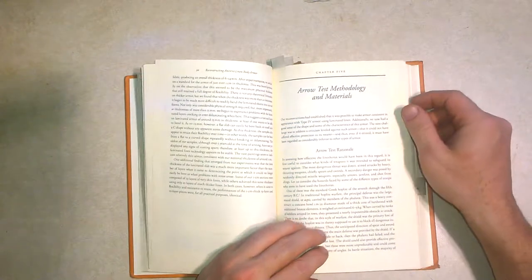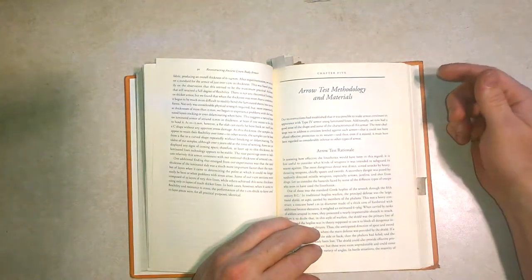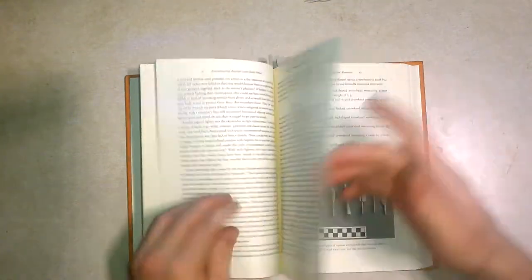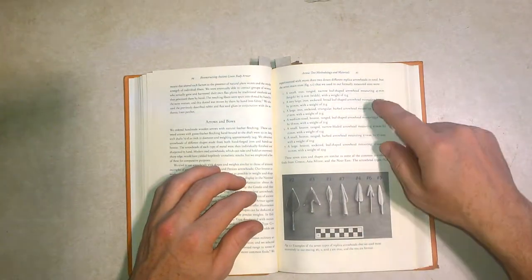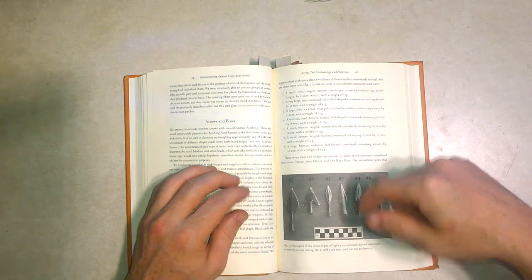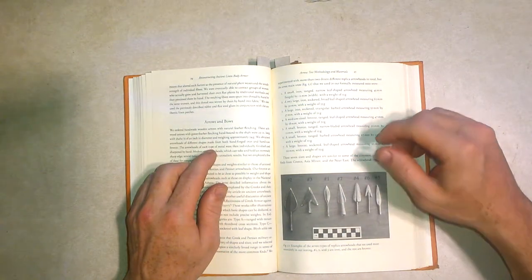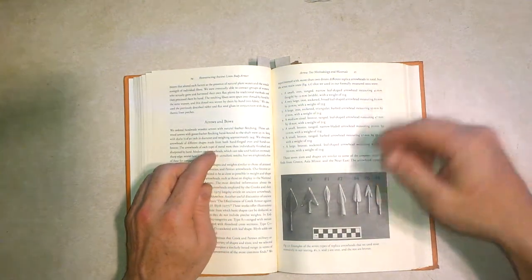It talks about the material being tested itself, but it also talks about the types of arrows that they used, gives specific weights and dimensions, even the weight, dimension, materials, and such for the shafts.